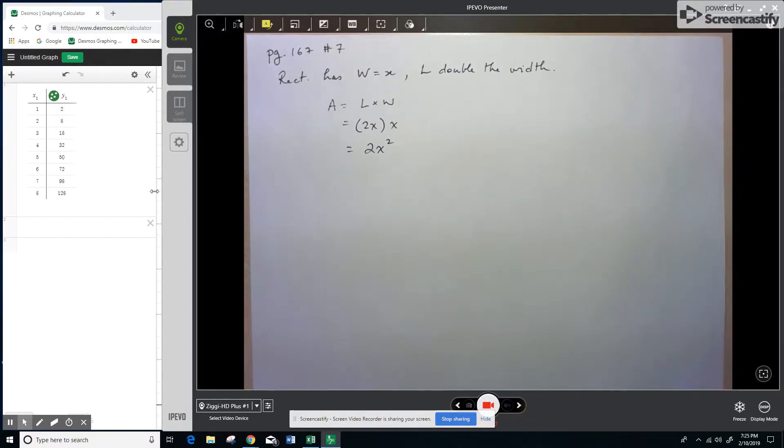So if we look to the left here, I created a table of values up to 8 centimeters, as they suggested. And how can we tell numerically? So table of values is an example of a numerical representation.